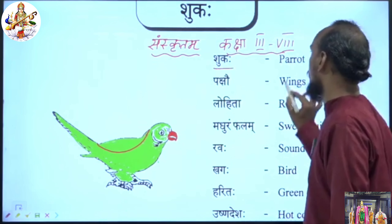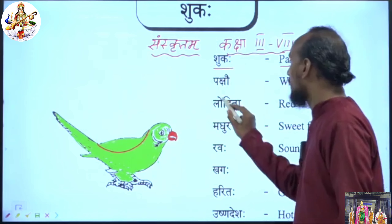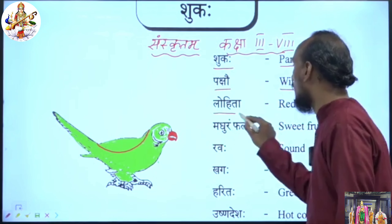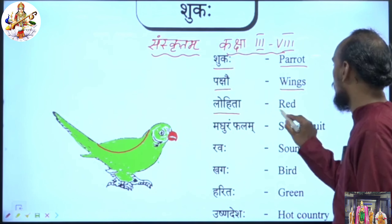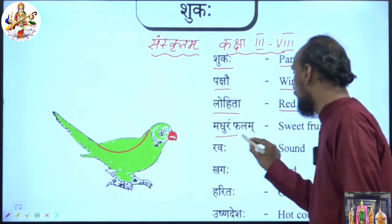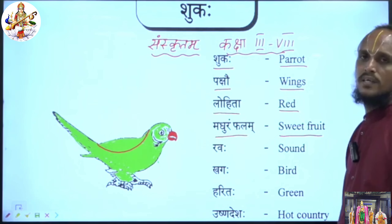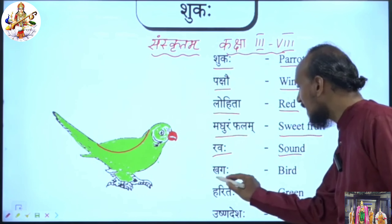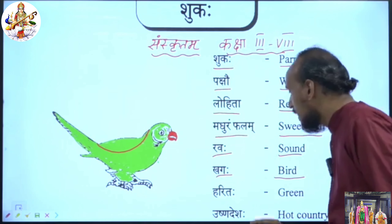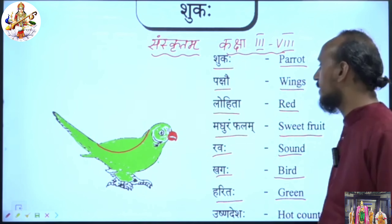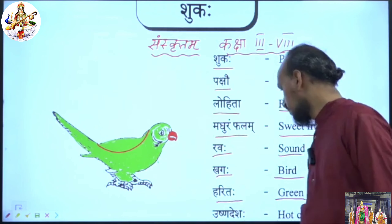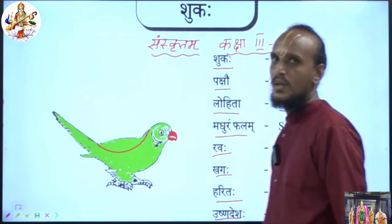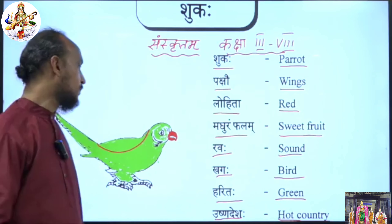Shukaha means parrot. Pakshav means wings. Lohita means red. Madhuram phalam means sweet fruit. Ravaha means sound. Khagaha means bird. Haritaha means green. Mushnadesaha means hot country.